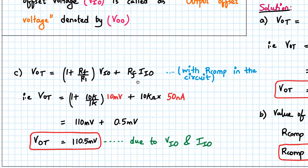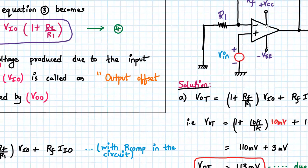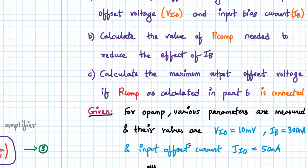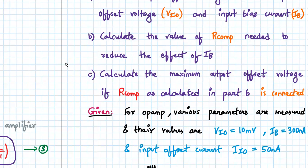Now the third thing, we will recalculate the part A values but with RCOM connected in the circuit. So 1 plus RF upon R1 into VIO plus RF into IIO. IIO value is 50 nano amperes and VIO is 10 millivolt. So we substitute inside the calculator. First term will be 110 millivolt and the second term will be 0.5 millivolt. Hence VOT will be 110.5 millivolt due to VIO and IIO. We hope that we have completely covered the numerical.